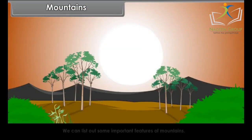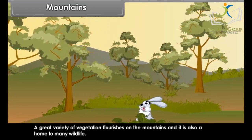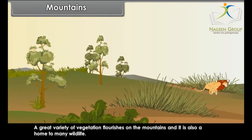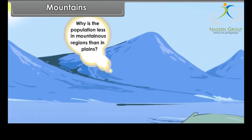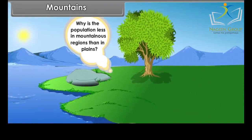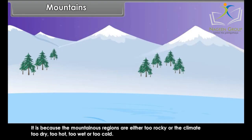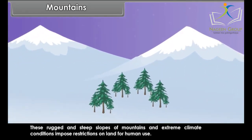Mountains: Some important features of mountains include that they control the climate, and many high mountains are the abode of snow. A great variety of vegetation flourishes on the mountains, and it is also home to much wildlife. Mountains also provide scenic beauty. Mountainous regions are less populated because they are either too rocky, or the climate is too dry, too hot, too wet, or too cold. These rugged and steep slopes and extreme climate conditions impose restrictions on land for human use.